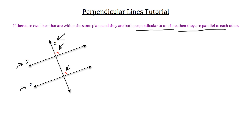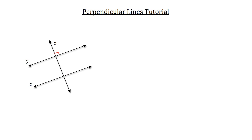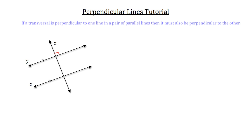So we can draw in some parallel symbols on those two lines, Y and Z. That's the first important theorem you should know about when dealing with perpendicular lines. The next theorem is: if a transversal is perpendicular to one line of a pair of parallel lines,